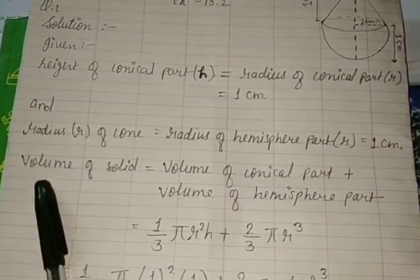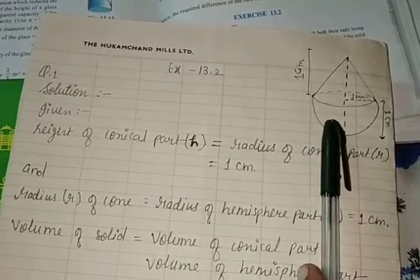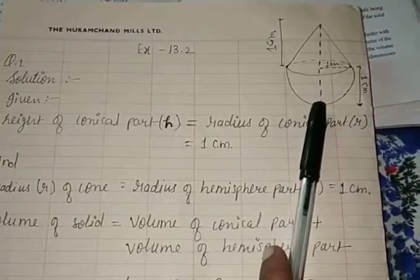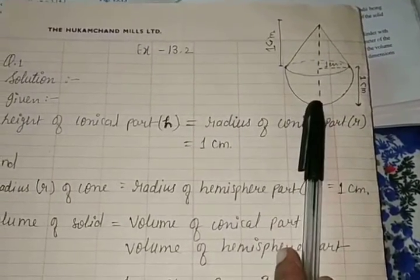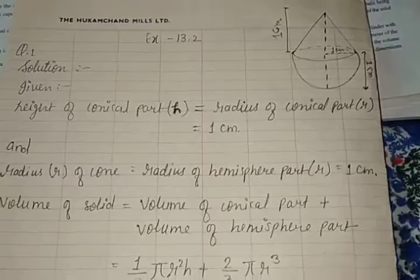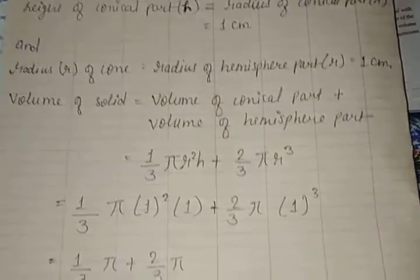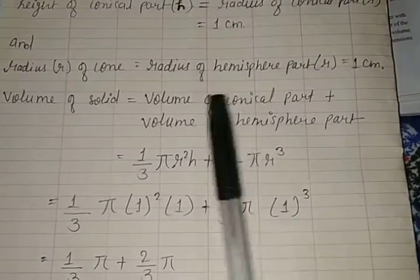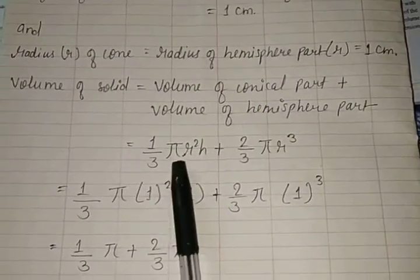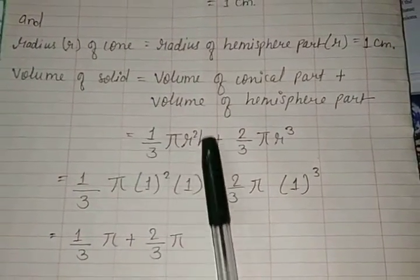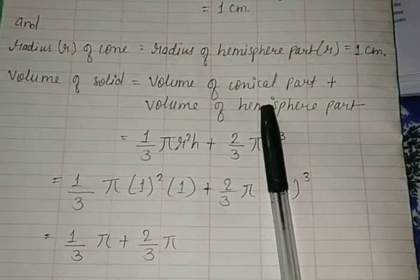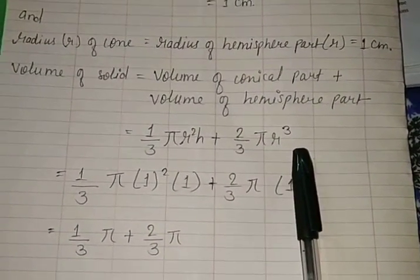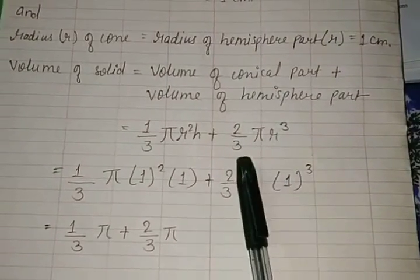Now we have to find the volume of the whole solid shape. Since the solid is a cone standing on a hemisphere, the total volume equals the volume of the conical part plus the volume of the hemisphere part. The formula for the conical part is (1/3)πr²h, and for the hemisphere part it is (2/3)πr³.